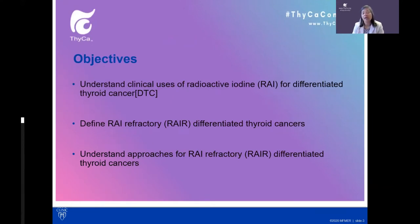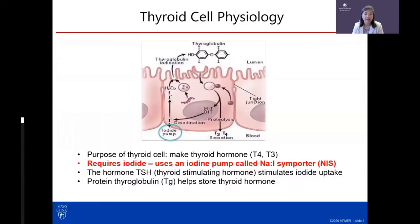The objectives for this talk are to help everyone understand clinical uses for radioactive iodine therapy, define radioiodine refractory thyroid cancer, and understand approaches for disease that doesn't respond to radioiodine. To begin, a cartoon of the thyroid cell is shown — its purpose is to make thyroid hormones T4 and T3, requiring iodide and an iodine pump.